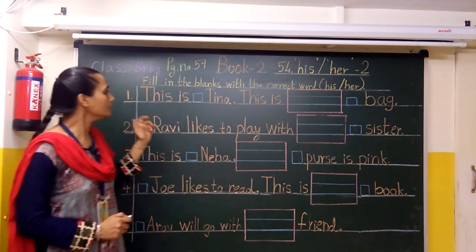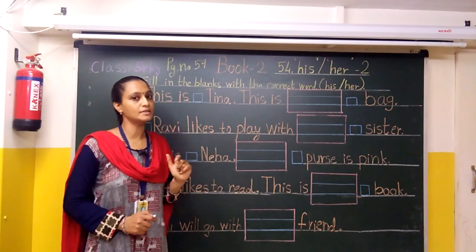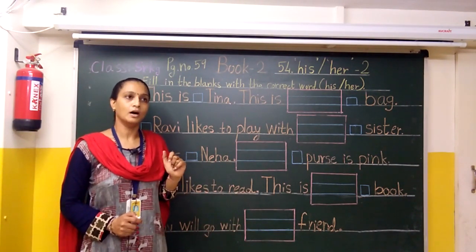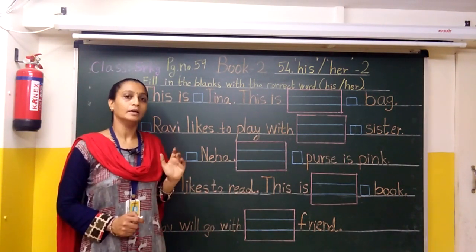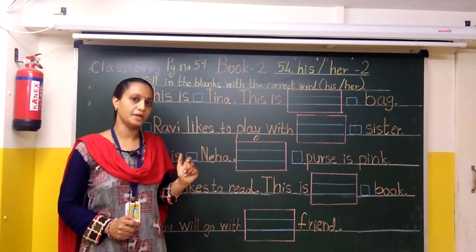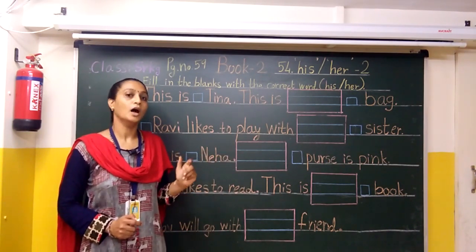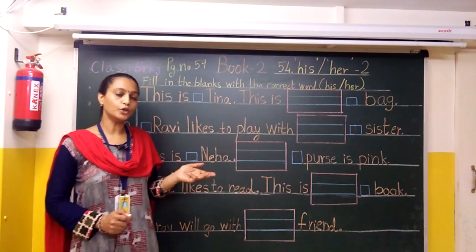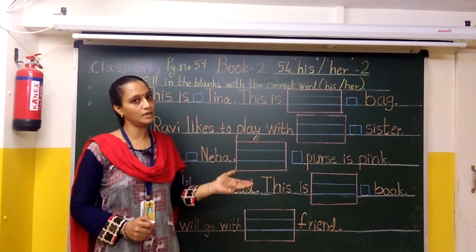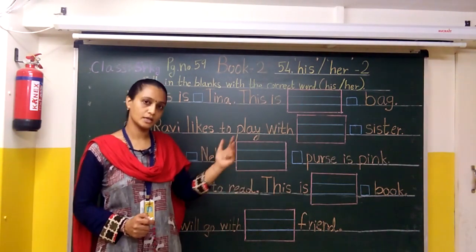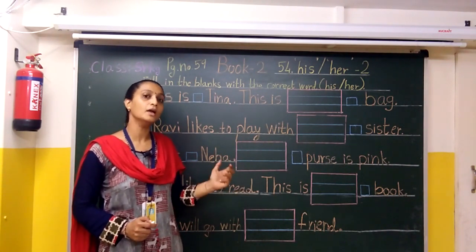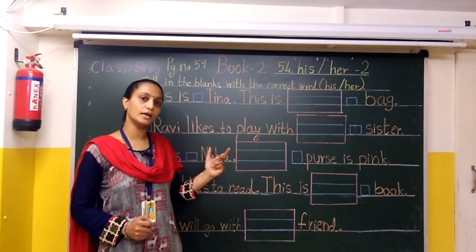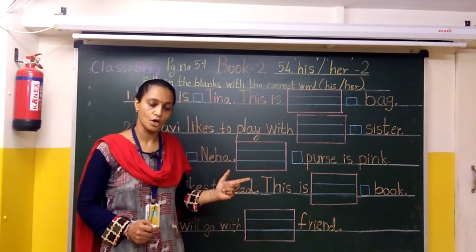We will learn how to use this. We have previously seen that when we say 'this is my brother,' now you have to name your brother's name. So what you will say: 'his name is Raju.' Your brother's name is Raju. So what do you have to use for a boy? 'He' — okay.